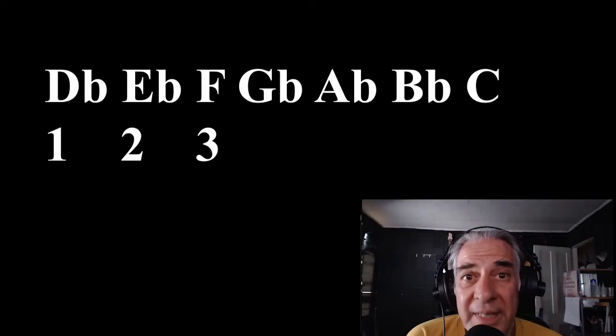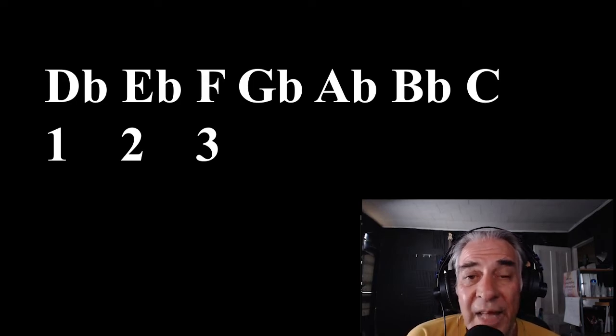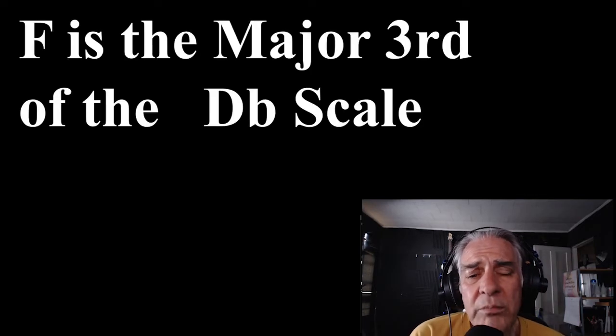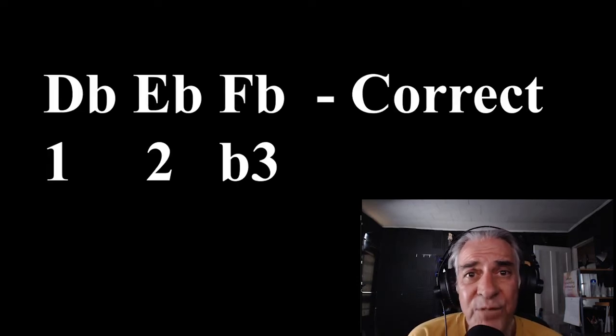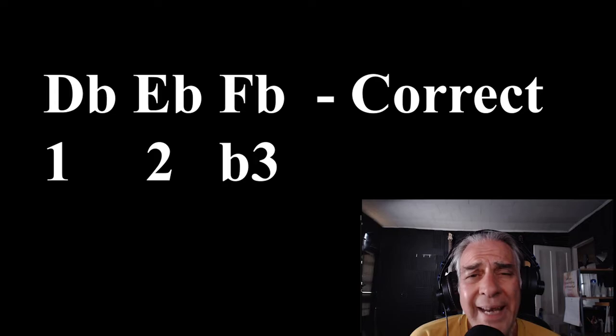We're going to be in the key of D-flat. There are five flats: B-flat, E-flat, A-flat, D-flat, G-flat. What we're going to do here is flat the third. The third would be the F — the third note of the scale: D-flat, E-flat, F. Now you could flat the F and it would be D-flat, E-flat, F-flat. There's your enharmonic.